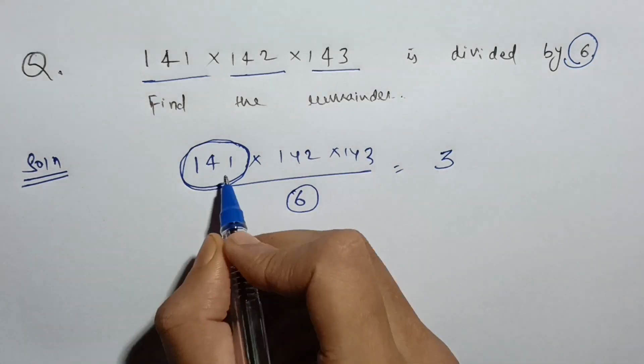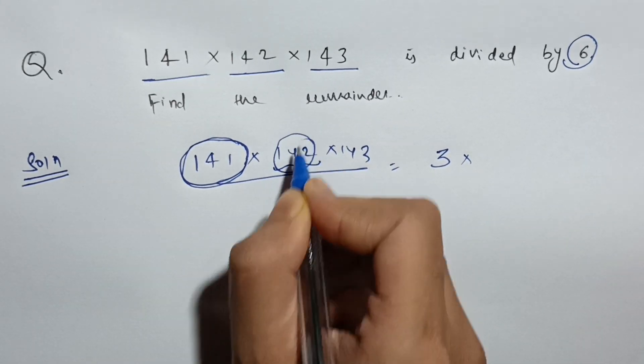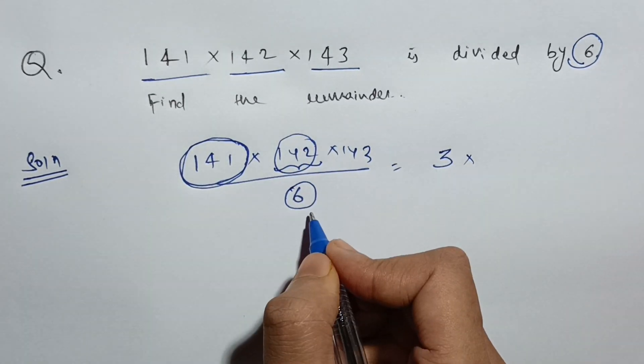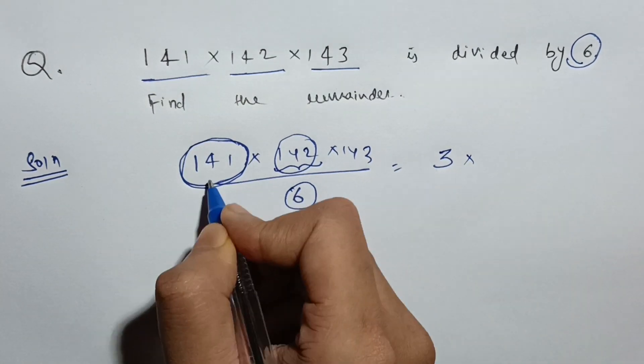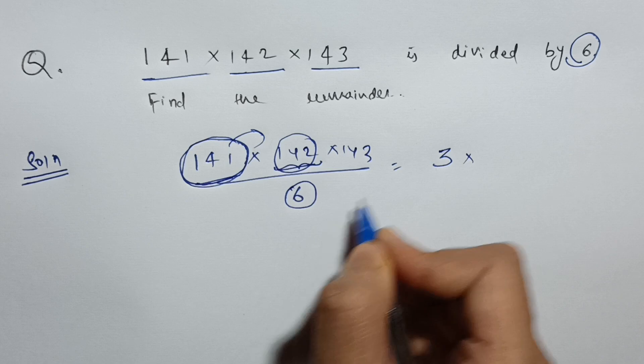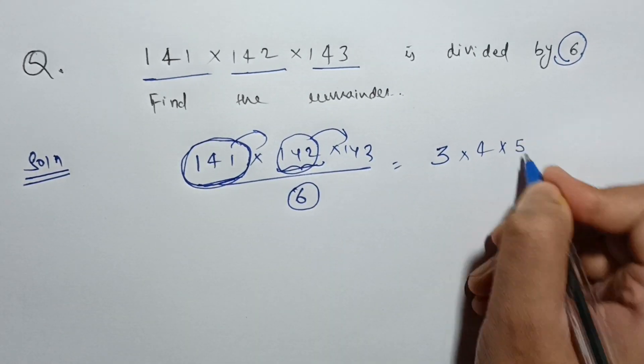So 141 can be replaced by 3. Do I need to find the remainder of 142 by 6? No. Since I know that the remainder is 3 for 141 and 142 is one more than 141, obviously the next remainder would be 4. Similarly, the next remainder will be 5.